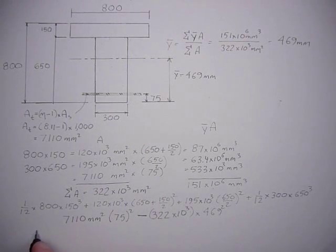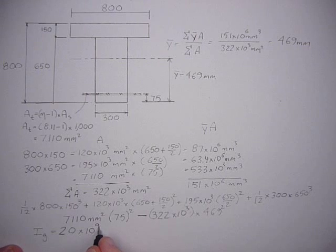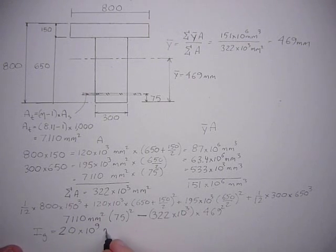Let's calculate that. I'll call it I gross. The gross inertia is 20 times 10 to the ninth millimeters to the fourth.